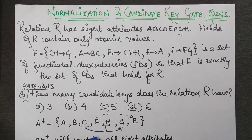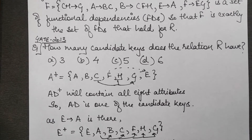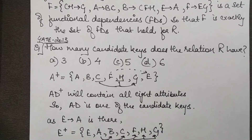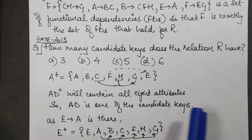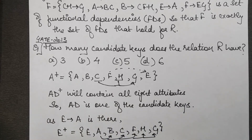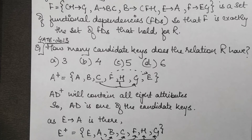To get D, we concatenate D onto A, making AD our first candidate key. The closure of AD contains all eight attributes, so AD is confirmed as a candidate key.